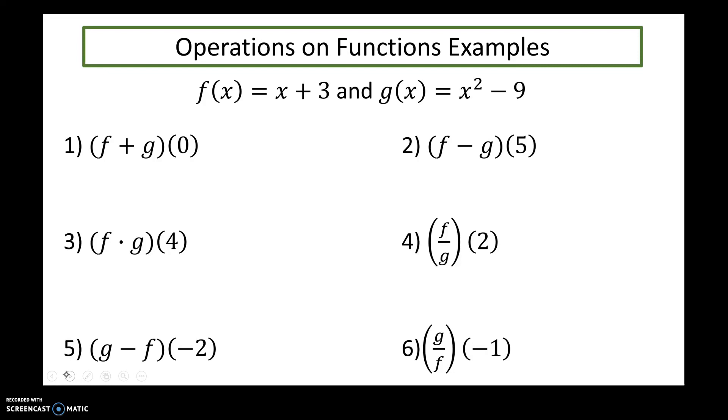Okay, so when I'm solving this, f of zero is three, g of zero is negative nine, so adding those function values together, negative six would be my answer. f of five is eight, g of five is 16, 8 minus 16 would give me negative eight.